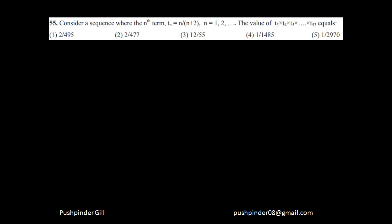Now it says consider a sequence where nth term is given by n divided by n+2. So he wants you to calculate the multiplication of term 3 all the way till term 53.